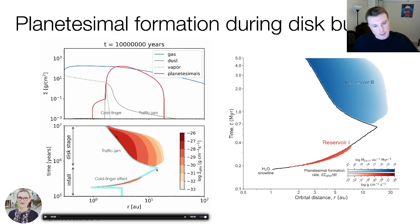What you particularly see is the drift of the snow line from the infall to the disk stage and the build-up of distinct planetesimal reservoirs during the time window, first because of the cold finger effect and then because of the traffic jam effect.